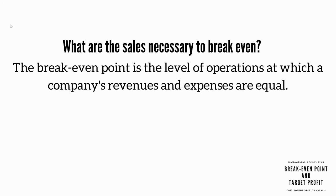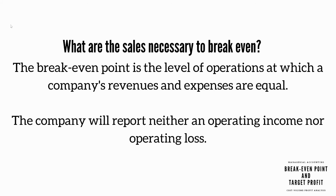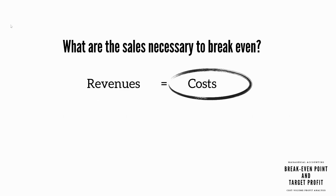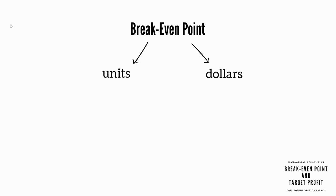The break-even point is the level of operations at which a company's revenues and expenses are equal. The company will report neither an operating income nor an operating loss. This is where our revenues equal our costs. The break-even point can be expressed in two different ways: one is units, and the other is dollars.